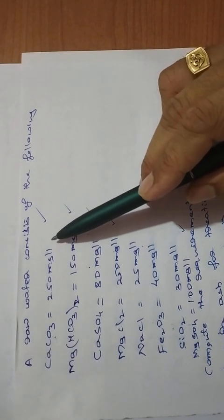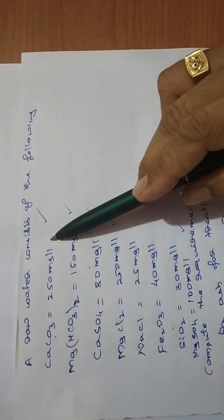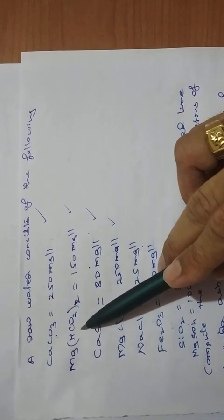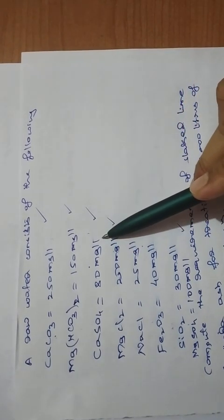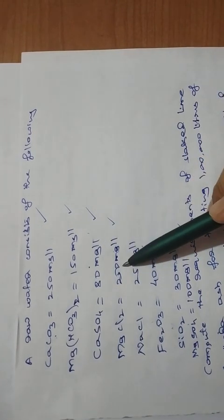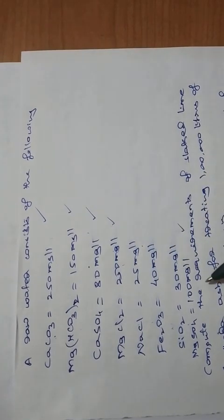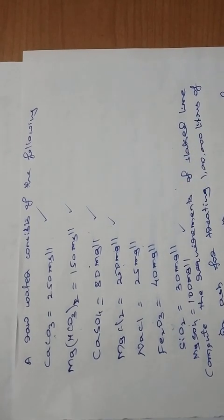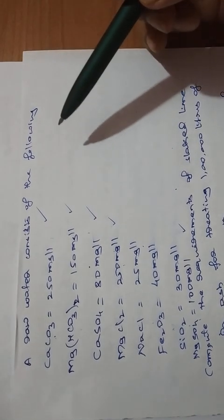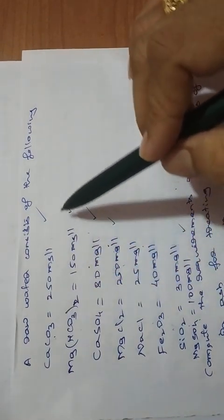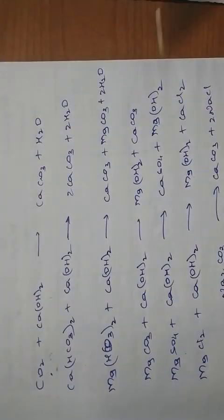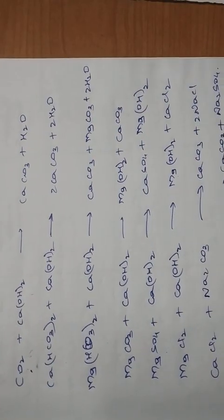Now let us understand which hardness is removed by what material. Calcium carbonate hardness will be removed by lime. Mg(HCO3)2 hardness will be removed by lime. Calcium sulphate hardness will be removed by soda ash alone. Magnesium chloride MgCl2 hardness will be removed by both lime and soda ash.